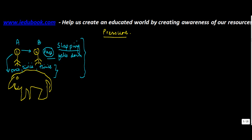Have you thought about the reason for this? As far as A was concerned, the hand he used to slap B and to slap the elephant was the same. The elephant was least bothered even after being hit three times, but B fell down on the very first hit. The reason is that the area on which the force was applied in the case of the elephant was very large.